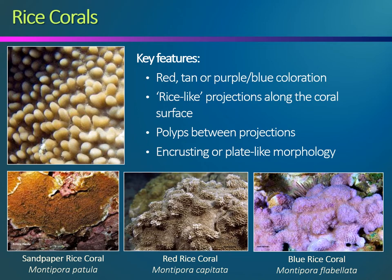Rice corals are also a common coral type in the Hawaiian Islands, but are often not easy to spot and recognize. Included in this category are sandpaper rice coral, red rice coral, and blue rice coral. This coral type is most often encrusting over the underlying substrate, although at certain wave-protected reefs, rice coral can also be plate-like. Up close, this type of coral has smooth, rice-shaped projections along the coral surface with polyps positioned in between these projections. Rice coral often grows underneath or in between other larger types of coral, including smooth mounding corals. Similar to small branching coral, rice coral is highly susceptible to thermal stress events and is often observed in a pale or bleached state during the summer season.